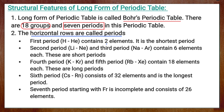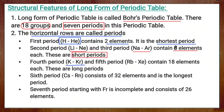The 1st period has 2 elements — hydrogen and helium — making it the shortest period of the periodic table. The 2nd period has elements from lithium to neon, and the 3rd period has elements from sodium to argon; both have 8 elements each and are called short periods. The 4th period has elements from potassium to krypton, and the 5th period has elements from rubidium to xenon; both consist of 18 elements and are called long periods.